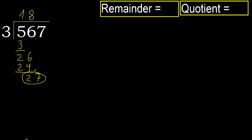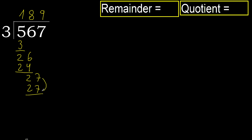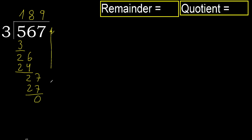27. 3 multiplied by 9 is 27. Okay, it is not greater. Subtract. 27 minus 27 is 0. Next, there is no number, therefore finish it.